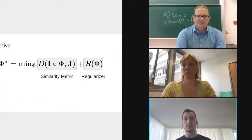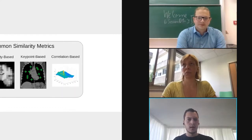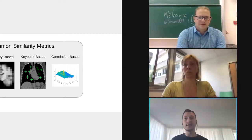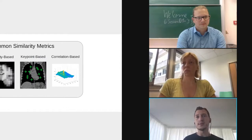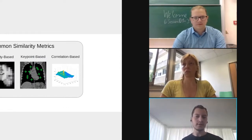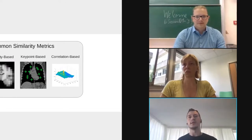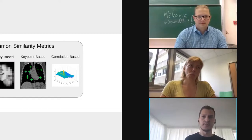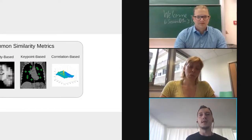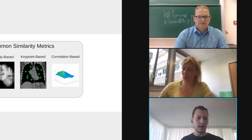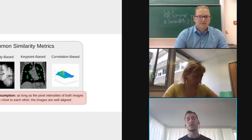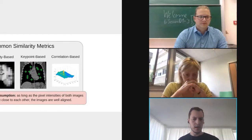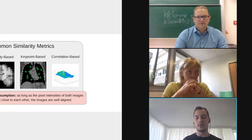The similarity metric is very important for both the optimization process and the final outcome. In the literature there are commonly used similarity metrics I'd group into three categories: intensity-based metrics that align pixel intensity values (e.g., mean squared error); keypoint-based metrics that focus on aligning annotated keypoints; and correlation-based metrics that look at correlations between image patches. Both intensity-based and correlation-based metrics ultimately look at pixel intensities.